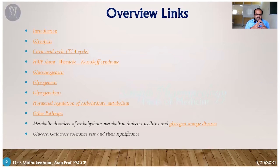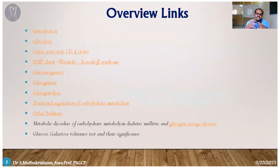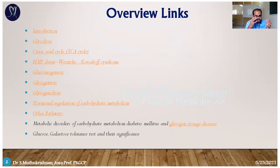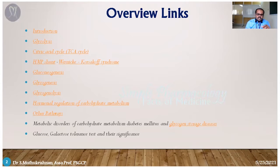As per your syllabus, we have seen so many pathways: glycolysis, HMP pathway, gluconeogenesis, glycogenesis, glycogenolysis, and some of the uncommon pathways like uronic acid pathway and sorbitol pathway. In this class I am going to summarize all those pathways in a single stretch in this hour.